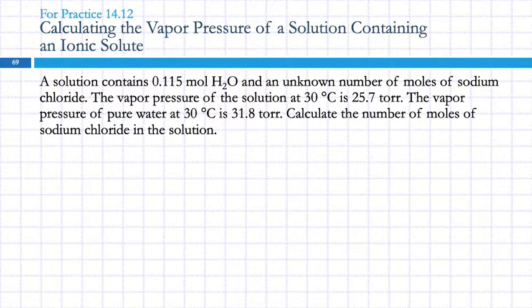A solution contains 0.115 moles of water and an unknown number of moles of sodium chloride. The vapor pressure is 25.7 torr. The vapor pressure of pure water is 31.8 torr. Calculate the moles of sodium chloride in the solution. There's an equation for this. If you had a question like this on the exam, you look at the sheet of useful information and find the equation. The vapor pressure of the solution equals the mole fraction of the solvent times the vapor pressure of the pure solvent.